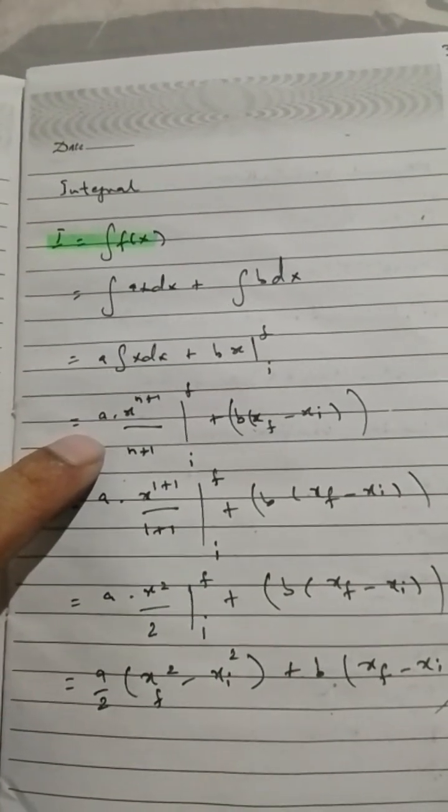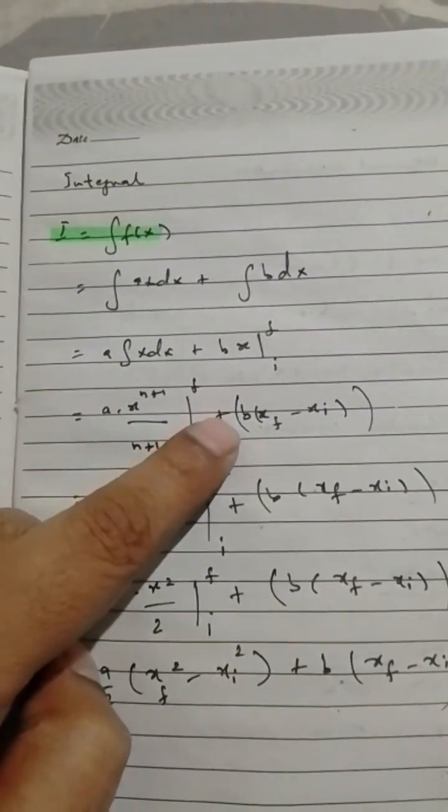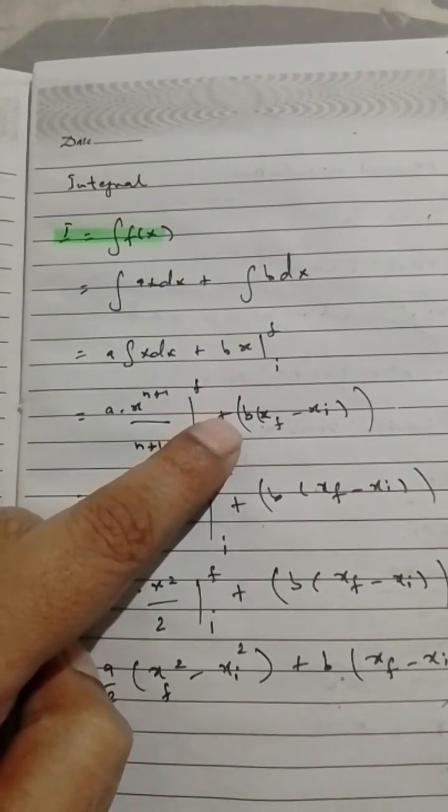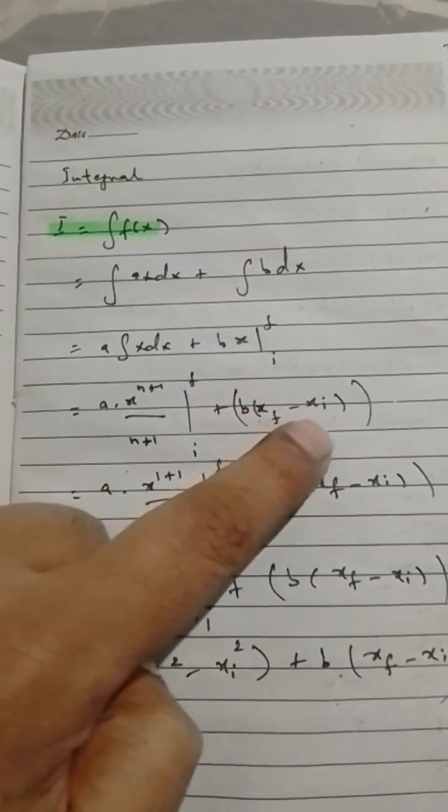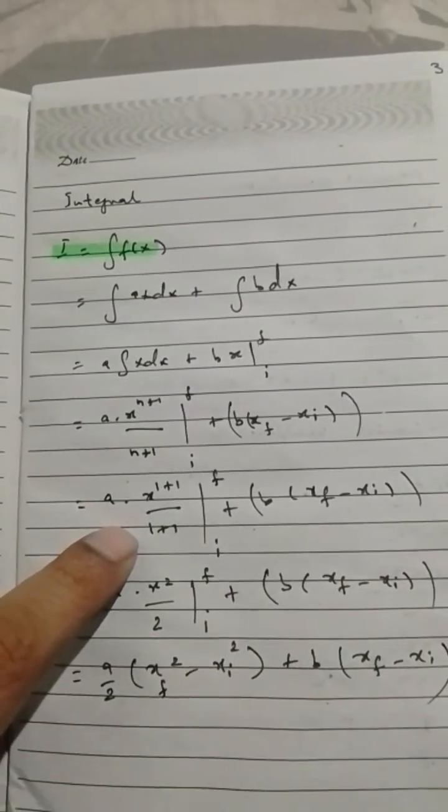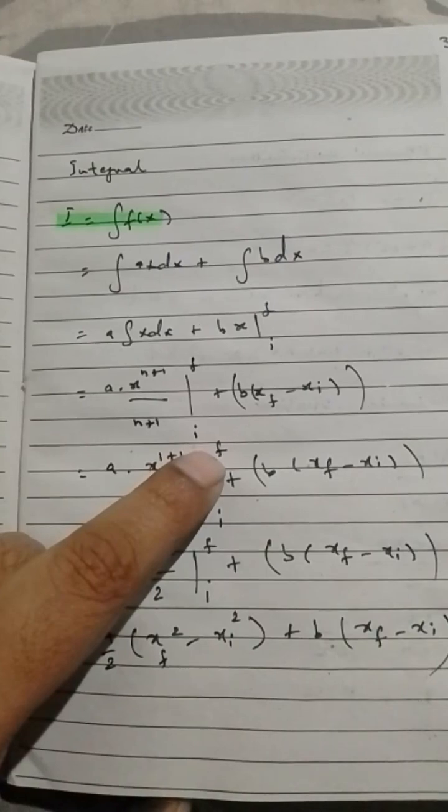Here with b, we are putting the limits, making it the definite integral, final minus initial (f minus i). So x^(1+1)/(1+1), putting the limit, indicating the limit, making it definite.